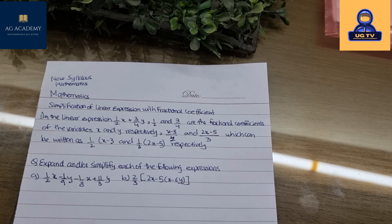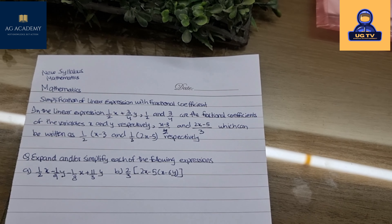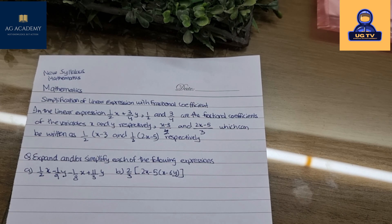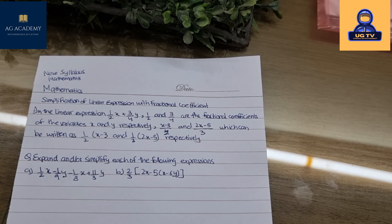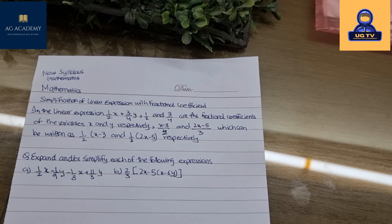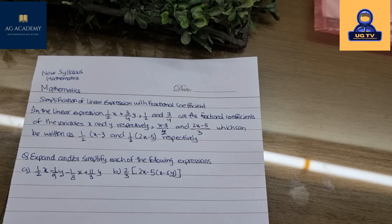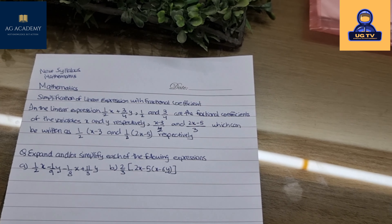For example, x minus three-over-two and two x minus five-over-three are two terms that can also be written as one-over-two times (x minus 3) and one-over-three times (2x minus 5). This is done by taking out the common factors of one-over-two and one-over-three out of the parentheses and writing the linear expressions inside the brackets.